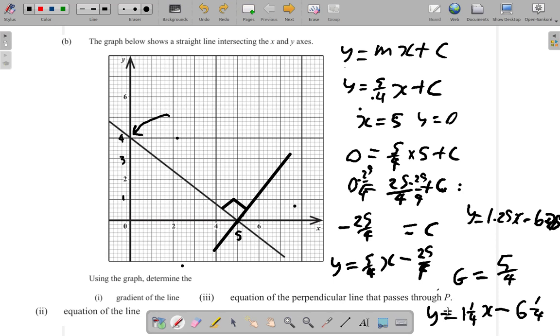The equation of this new line, which is perpendicular to the line that passes through P is, Y equals 1 and a quarter X minus 6 and a quarter.